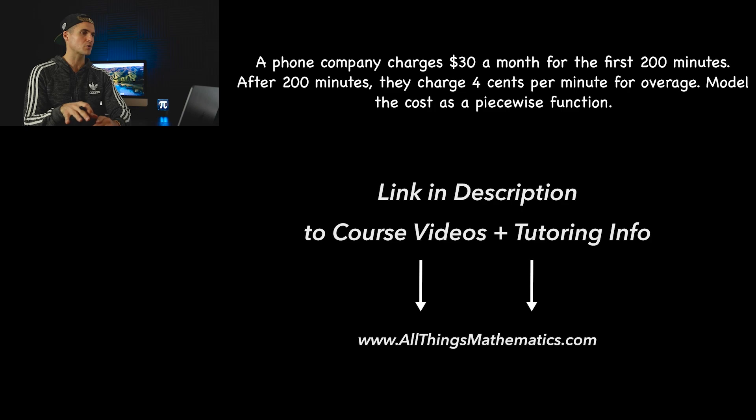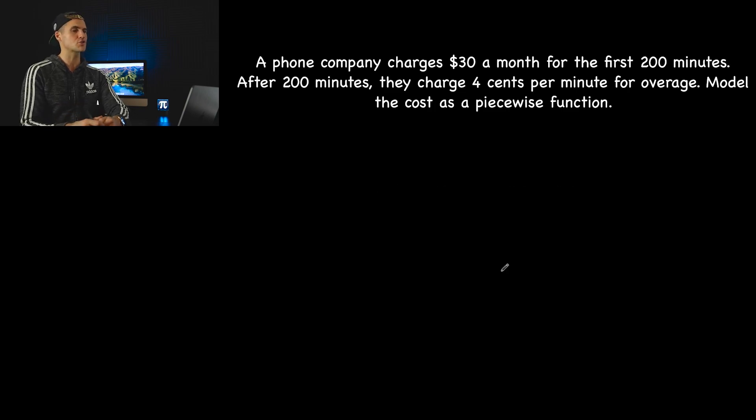So in this particular word problem, we're told that a phone company charges $30 a month for the first 200 minutes of use. After 200 minutes, they charge $0.04 per minute for overage. And then we have to model the cost as a piecewise function. So before we get into the algebra or creating the function, just so we're clear on what's going on here, I'm going to represent this situation with a number line.